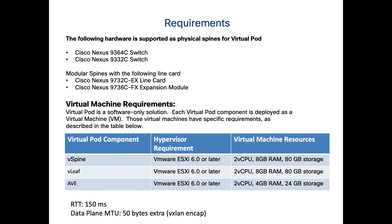From a requirements perspective, on the physical pod you need Gen 2 spines, whether fixed or modular. For your virtual machines, you need ESXi 6.0 or higher. Each V-leaf and V-spine requires two vCPUs, 8 GB of RAM, and 80 GB of storage. The AVE requires two vCPUs, 4 GB RAM, and 24 GB of storage. The round-trip time between your physical pod and virtual pod should be 150 milliseconds or less, and you also need to increase your MTU by 50 bytes since data plane packets are all encapsulated in VXLAN.